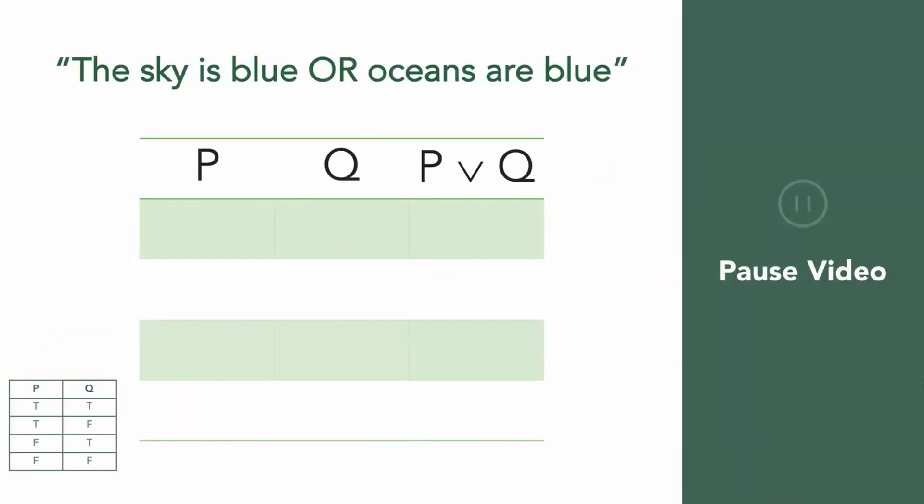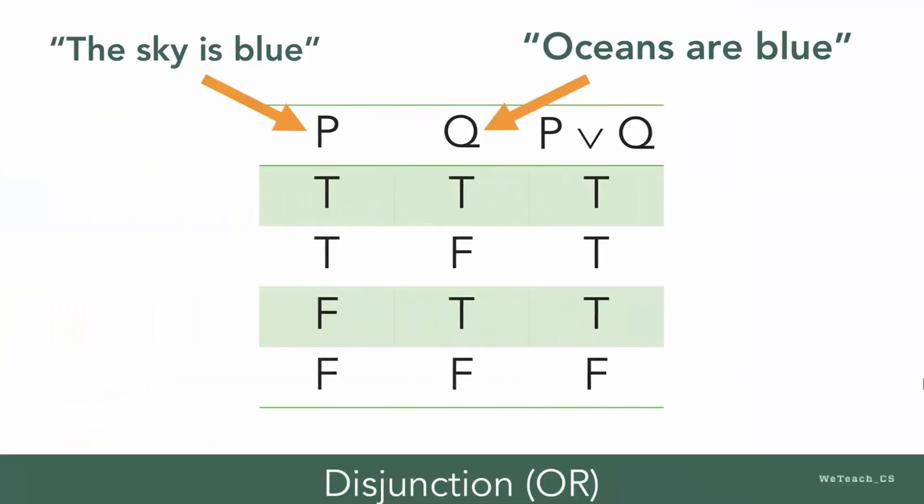Now, pause the video and try constructing a truth table for this disjunction example. The resulting truth table of P disjunction Q looks like this. Notice that it's similar to the truth table representation of conjunction, except that the combined statement P or Q is considered true if any of the variables is true.